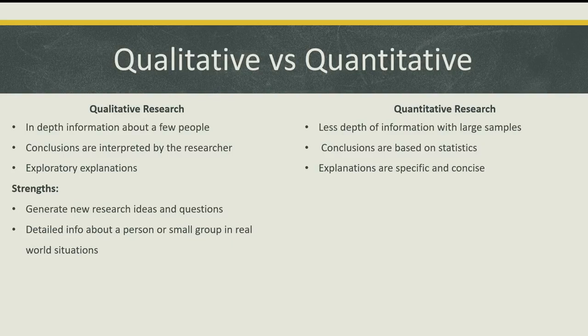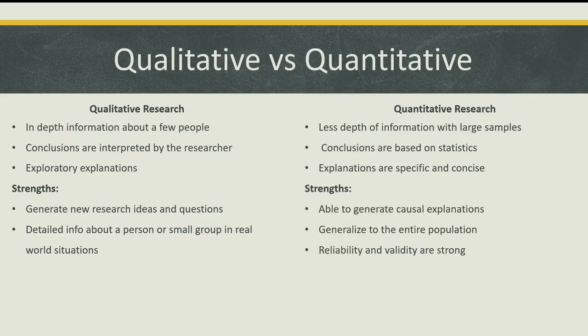Some strengths of qualitative research include that they generate new research ideas and questions, and they provide detailed information about a person or small group in different real-world situations. Whereas some strengths of quantitative research include that they're able to generate causal explanations and establish cause and effect between two variables. This research is also able to generalize to the entire population because of large samples, and the reliability and validity of quantitative studies are generally strong.